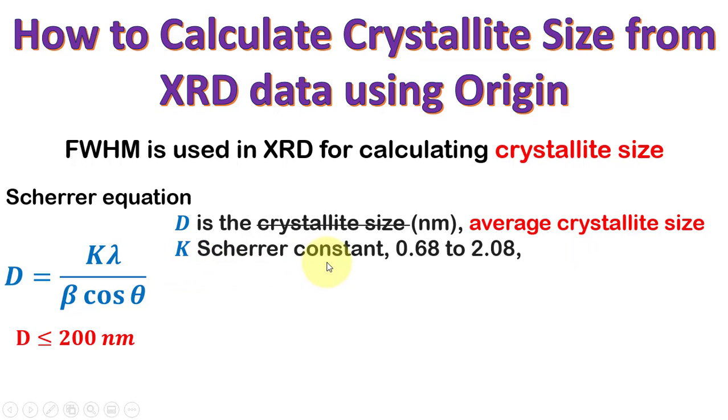K is the Scherrer constant whose value ranges from 0.68 to 2.08, while for spherical crystallites with cubic symmetry this value is approximately 0.94. The value of Scherrer constant is very important because D is directly proportional to the Scherrer constant.